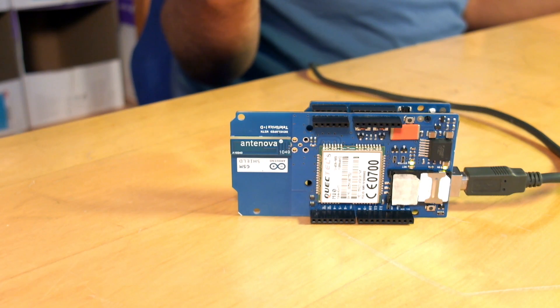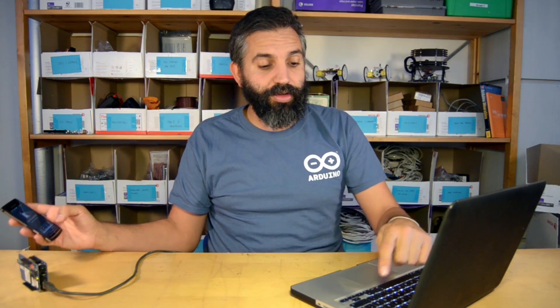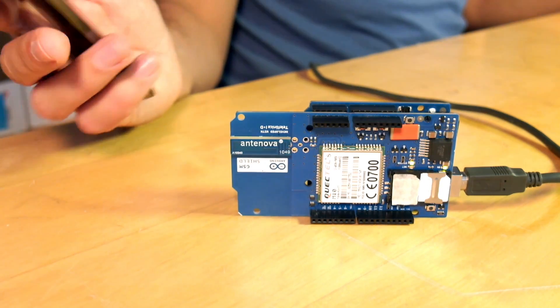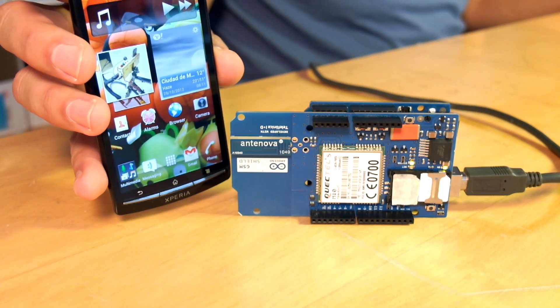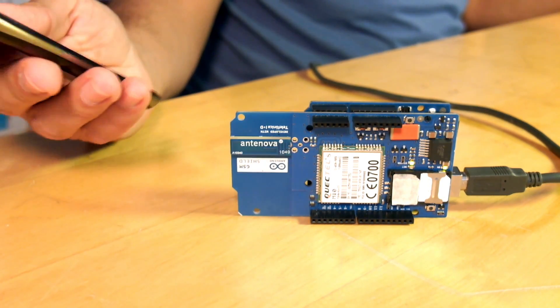I can stop the call from both ends. I will stop the call from the shield by pressing enter on the serial port monitor. And this got the call to an end. That's it.